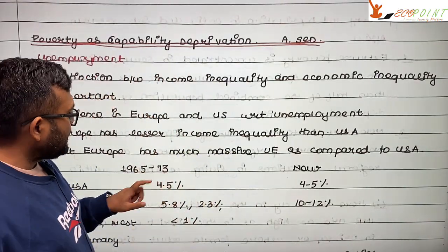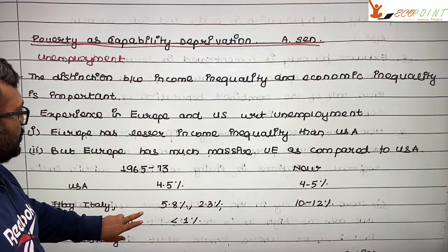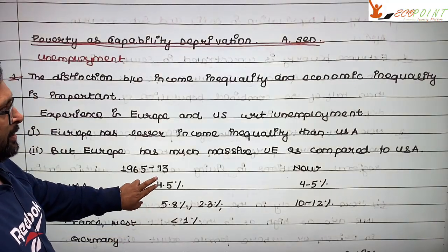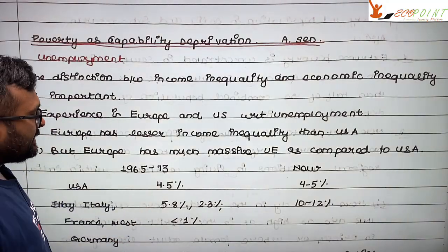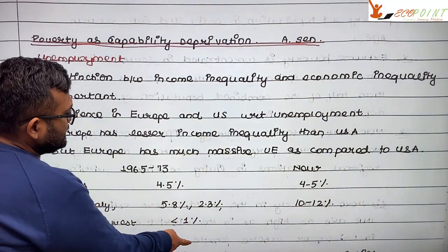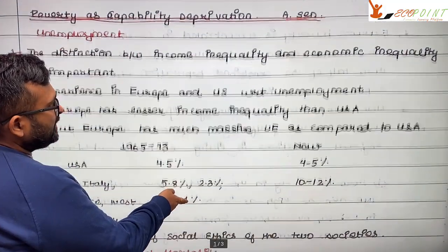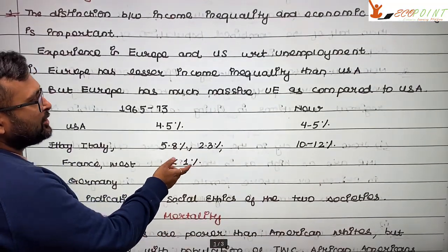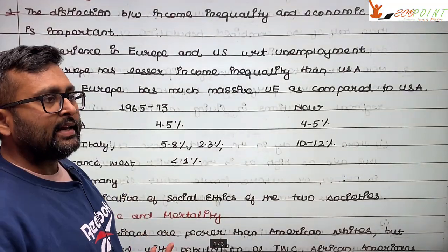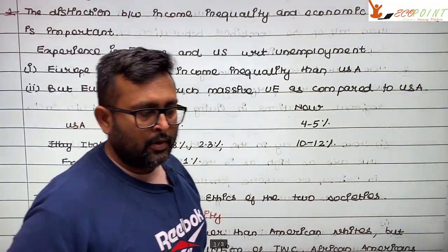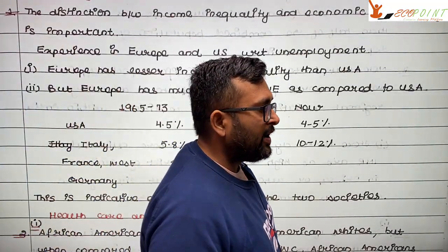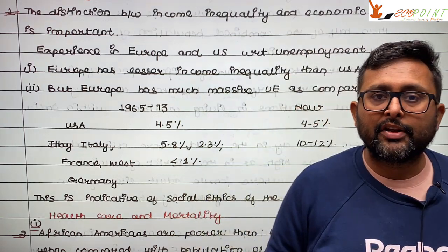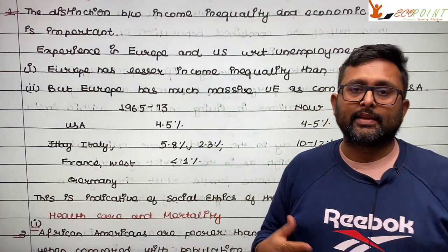Three examples we'll cover today. First is unemployment. He says that if you look at the unemployment rates in the US and in Europe, you will find that there is little difference in the social ethics — there is little difference in the attitudes of people.